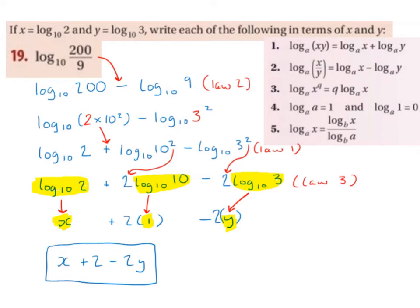So the division becomes a minus and we split up the log. Now we have log base 10 of 200 minus log base 10 of 9. Next, I'm going to break down 200 to be 2 times 10 squared. It's important to note that I'm looking to get factors of 2 and 3 in my logs, because x equals log base 10 of 2 and y equals log base 10 of 3.